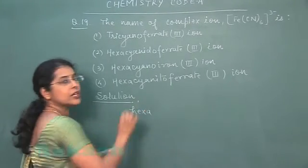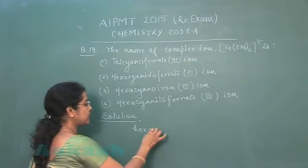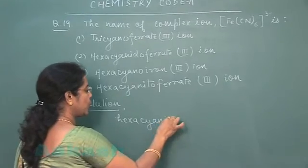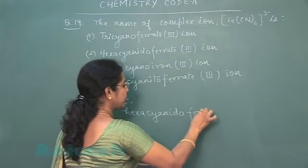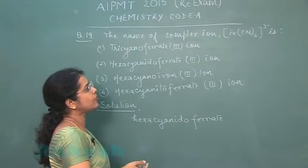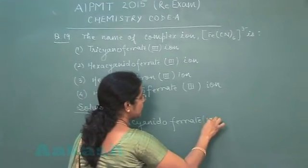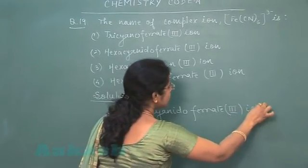For six it is hexacyanide. According to IUPAC convention we must write cyanido. This is anion so metal is ferrate. And oxidation state of iron in this complex is 3, so we write here 3 and iron.